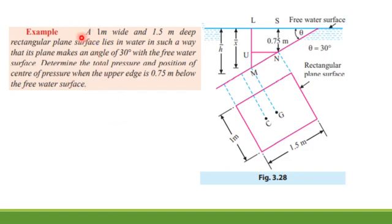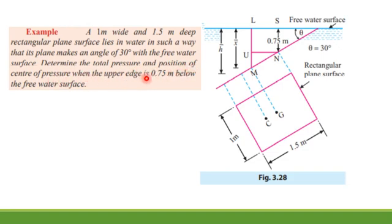The problem statement: a 1-meter wide and 1.5-meter deep rectangular plane surface lies in water such that its plane makes an angle of 30 degrees with the free water surface. Determine the total pressure and position of the center of pressure when the upper edge is 0.75 meters below the free water surface.